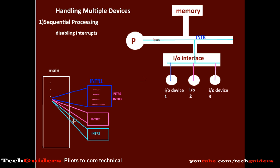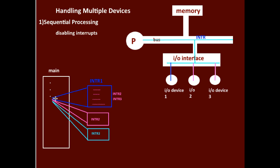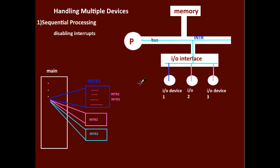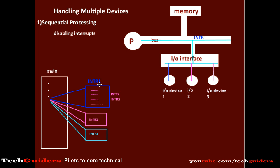For example, while executing the main routine, I/O device 1 raised an interrupt, and while its interrupt is being handled, device 2 and device 3 raised their interrupts, but those requests will be ignored for the time being. After completing the request, control is returned to the previous point, and from there, interrupts 2 and 3 are handled in sequential order. So here, the interrupt is not allowed to be interrupted again — the execution of an interrupt service routine, once started, always continues till completion before the processor accepts a request from a second device. This is a simple and easy implementation, but it does not give any importance to the priorities of the requests.